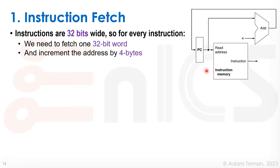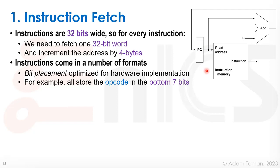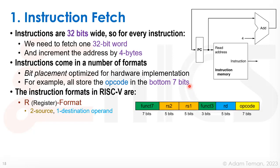Instructions come in a number of formats. In RISC-V, each bit within the 32 bits was carefully placed to optimize hardware implementation. For example, opcodes — which tell us what the instruction does — are always in the bottom seven bits. This means the same exact bits always go to the decoder, reducing wiring complexity. If opcodes were scattered throughout the 32 bits it would make wiring much harder, requiring more muxes during place-and-route.